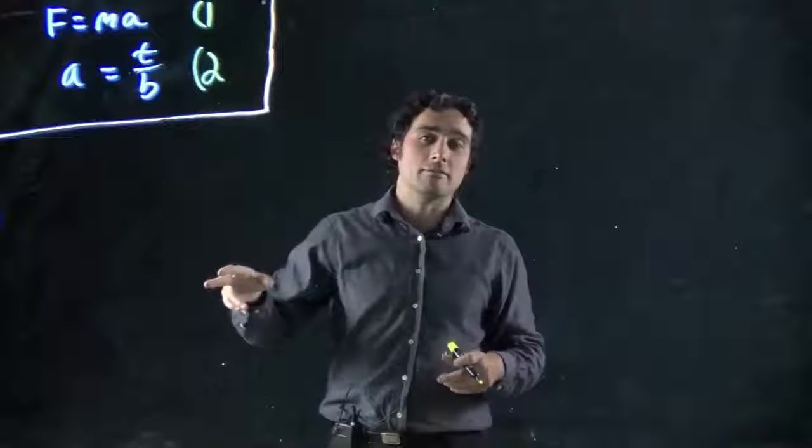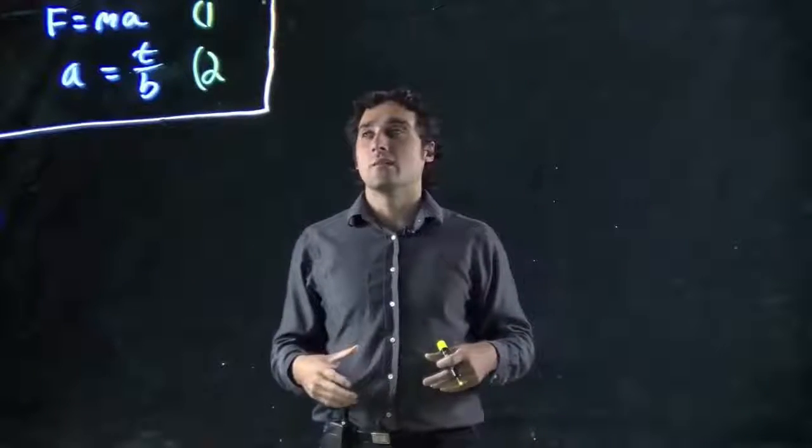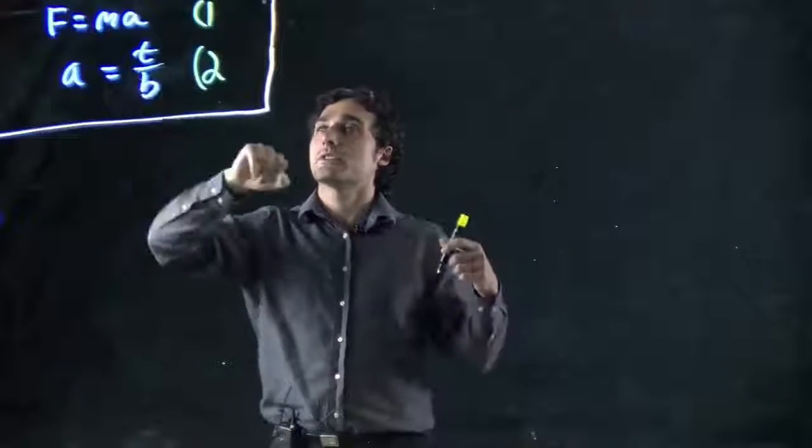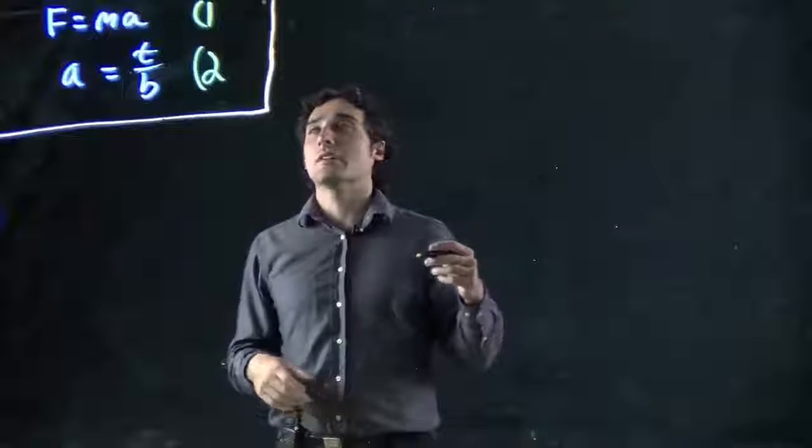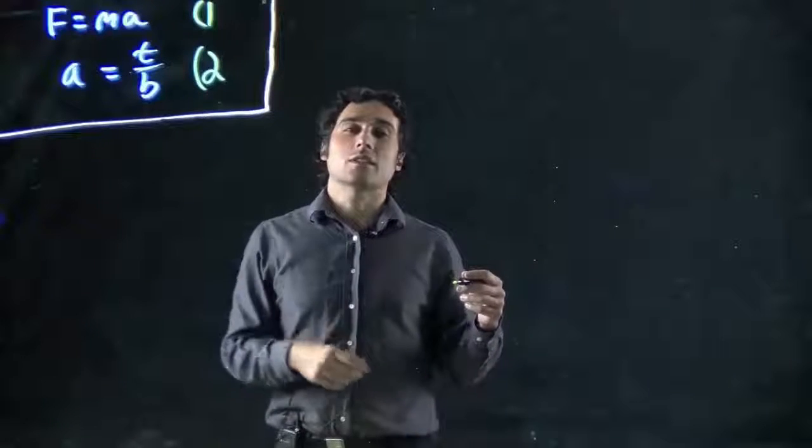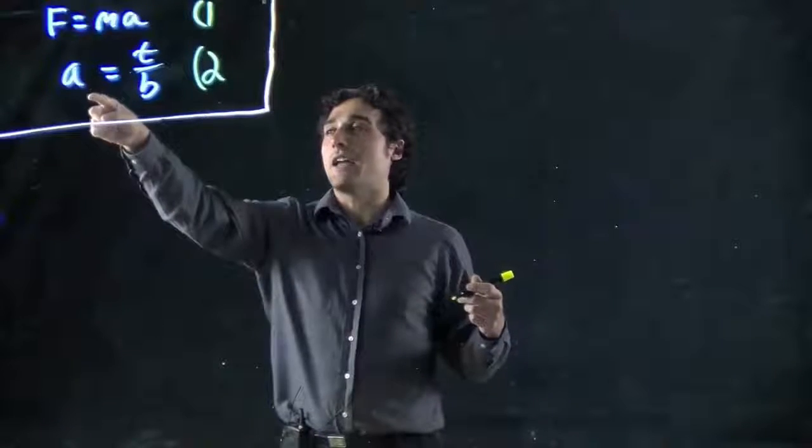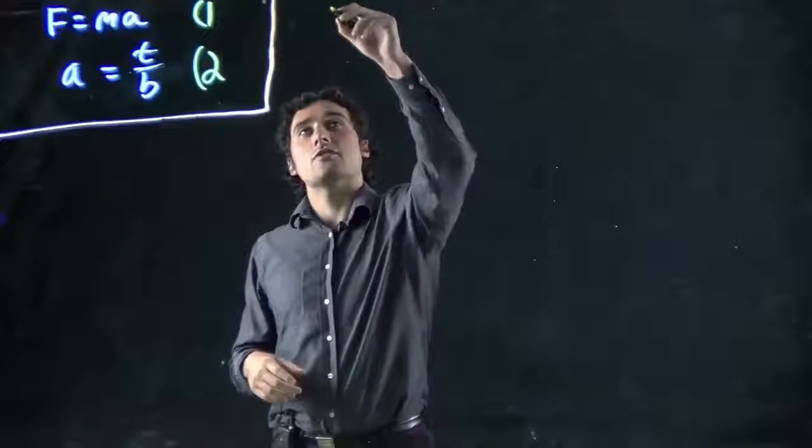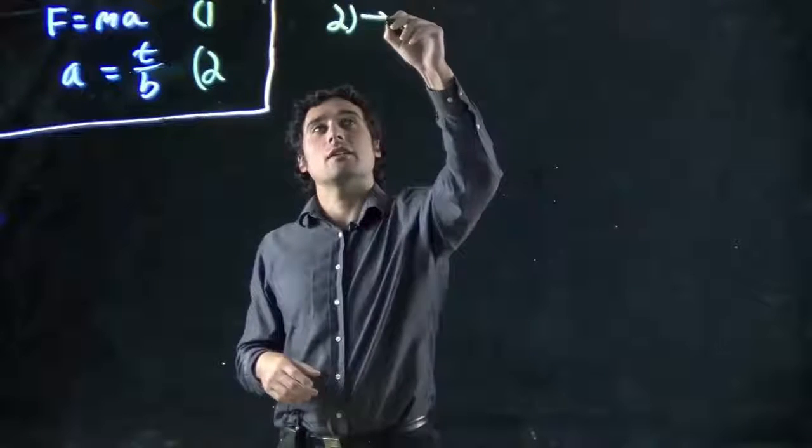Or we can just say A equals T over B. Again, this is just to demonstrate, but that gives you some idea of the context of it. So what we can do is actually sub equation 2 into equation 1. We've got to get rid of A. We've already got what A is right here. So if we take equation 2 and put it into 1.